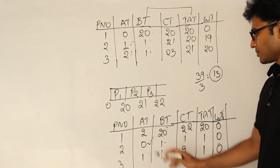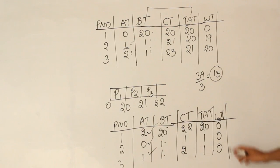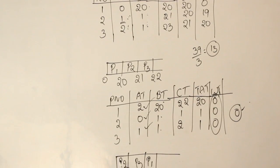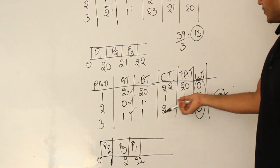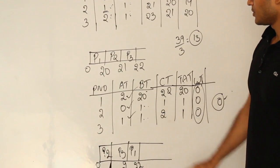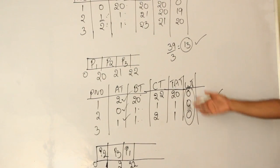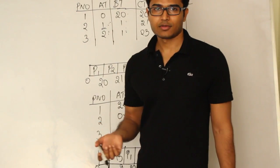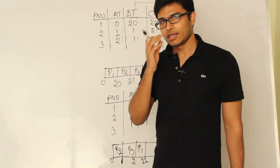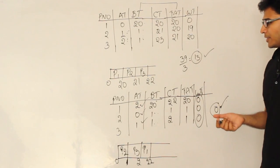The waiting time — turnaround time minus burst time — is 0, 0, and 0. No process is actually waiting, because P2 was scheduled first, then P3 as soon as it arrived, then P1 as soon as it arrived. Average waiting time is 0 here versus 13 in the previous example. Therefore, even SJF is subject to a kind of convoy effect, even though it is not mentioned in textbooks.